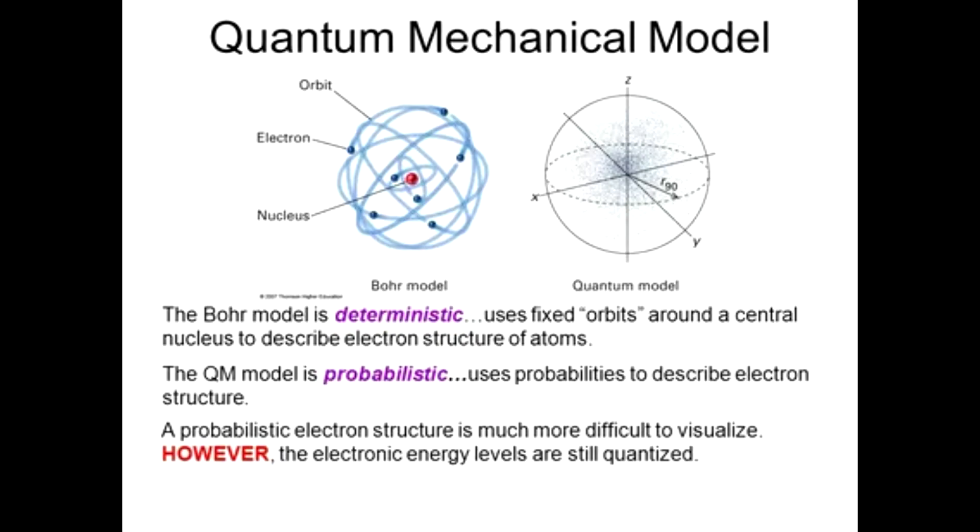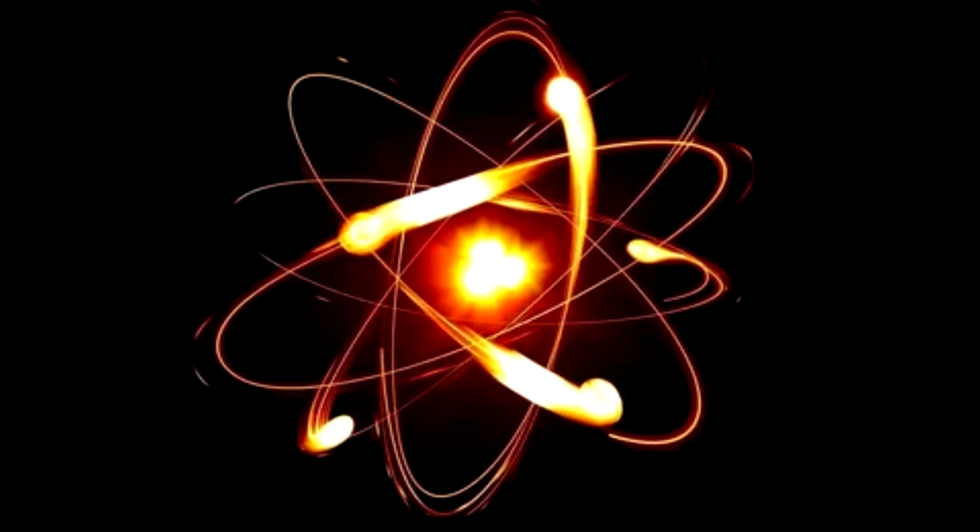In classical mechanics, objects exist in a specific place at a specific time. In quantum mechanics, objects instead exist in a haze of probability.